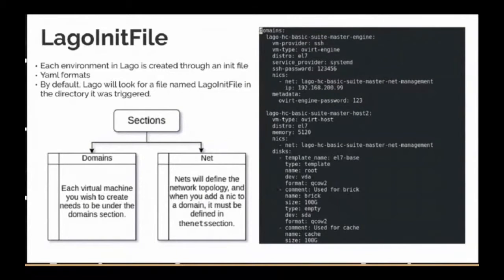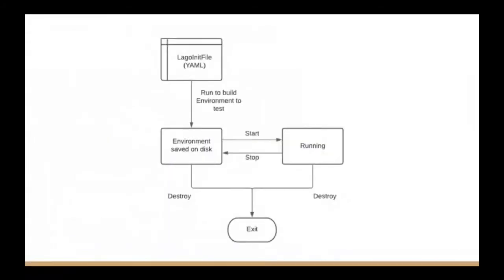Setting up a Lago environment is rather simple. You can define your requirements through a Lago init file, which is written in YAML format. The init file contains two sections: domains and net. You can define your virtual machines or hosts under domains, and the network topology under net. When you add a NIC to a VM, it must be defined under net. You can define a Lago init file as per your requirement and simply run Lago to create that environment. The environment is saved on disk as a qcow2 image, and you can start, stop, pause, or destroy images as your testing requires.